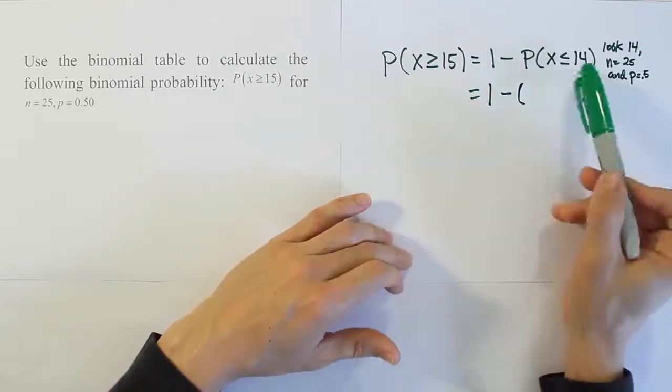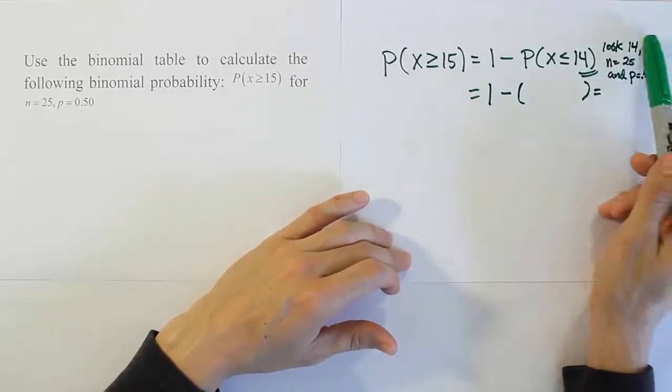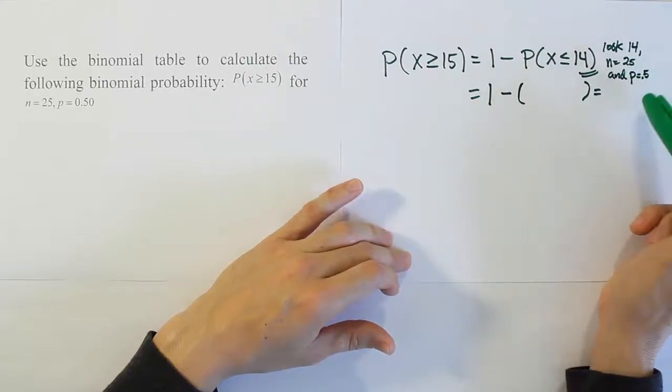Let's go ahead and do that now. Let's go to our binomial table. We'll look up 14 under n equals 25 and p equals 0.5.